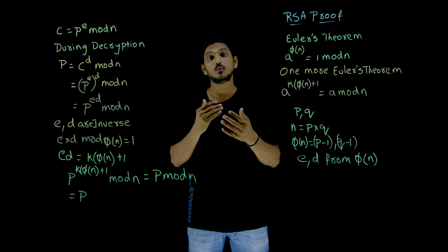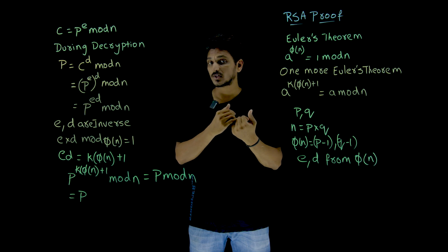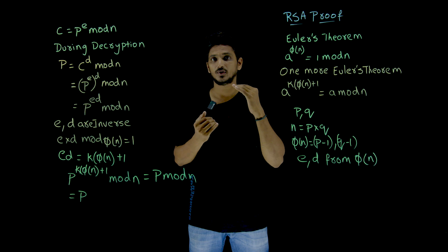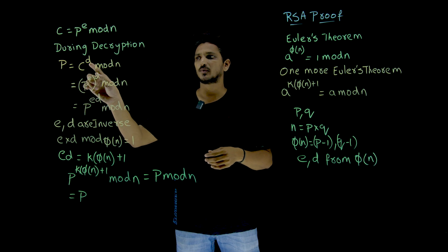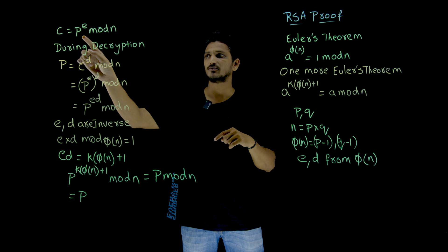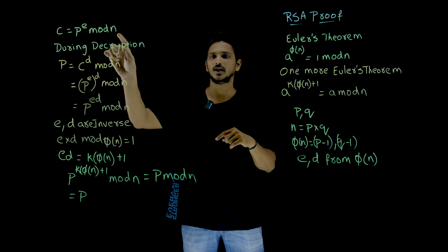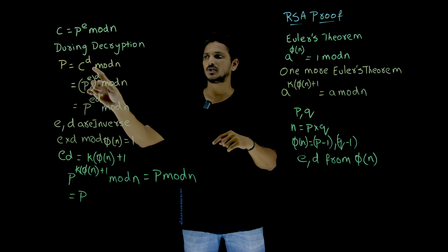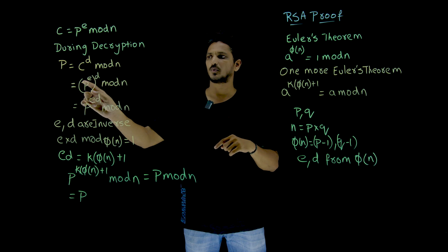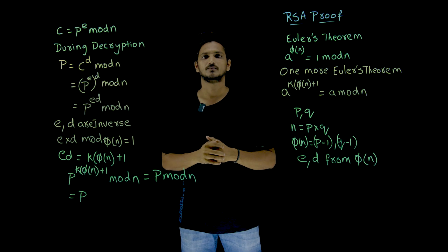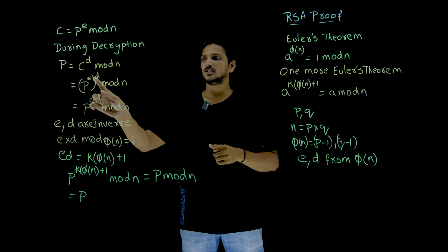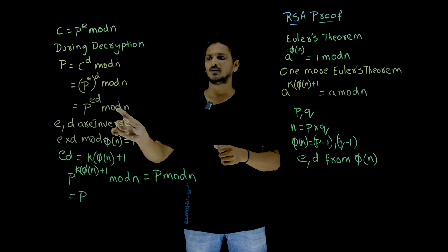Why do we exactly get the original plaintext value back? We start with C to the power d, mod n. C is the ciphertext, and C equals p to the power e, mod n. Substituting, we get: p to the power e, whole raised to the power d, mod n. This can be written as p to the power e·d, mod n.